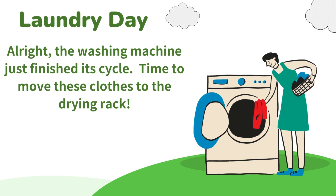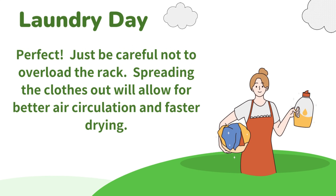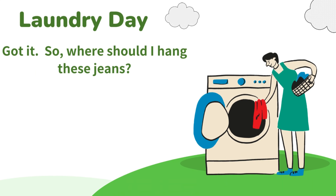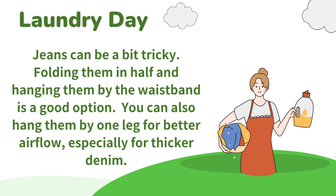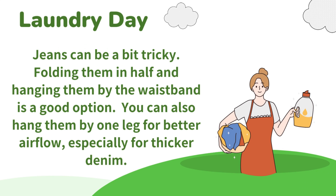All right, the washing machine just finished its cycle. Time to move these clothes to the drying rack. Perfect. Just be careful not to overload the rack. Spreading the clothes out will allow for better air circulation and faster drying. Got it. So, where should I hang these jeans? Jeans can be a bit tricky. Folding them in half and hanging them by the waistband is a good option. You can also hang them by one leg for better airflow, especially for thicker denim.